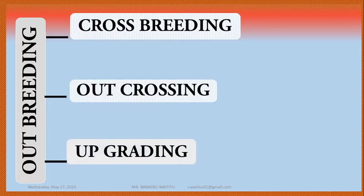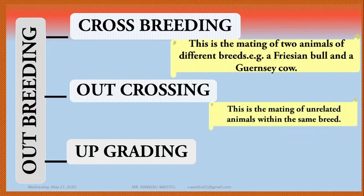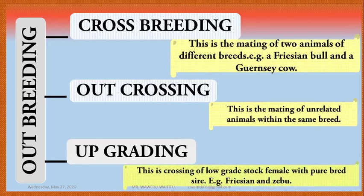Crossbreeding is defined as the mating of two cattle of different breeds — for example, a Friesian bull and a Guernsey cow. Outcrossing is the mating of unrelated animals within the same breed — for example, fertilizing a cow in South Africa with semen from the Netherlands. Upgrading is the crossing of low-grade stock female with a purebred sire — for example, a Friesian crossed with a Zebu.